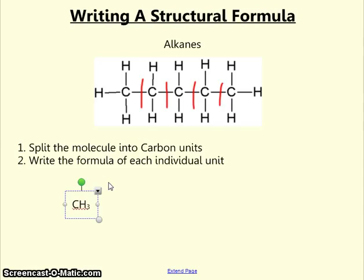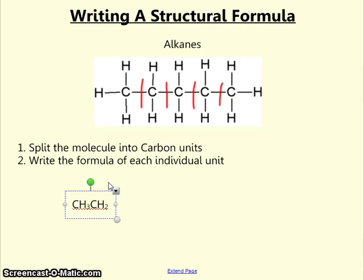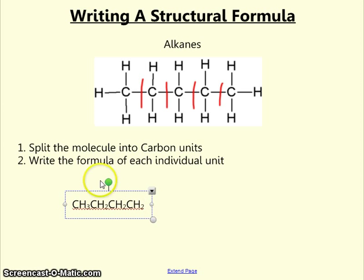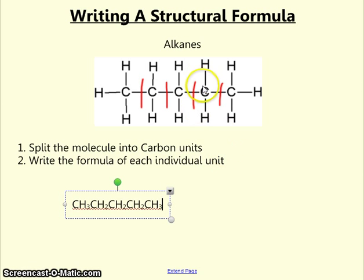On the carbon next to it we have CH2. On the middle carbon we have another CH2. The carbon after that is another CH2, and then finally we are left with a CH3. That is how pentane's displayed formula can be converted into a structural formula.